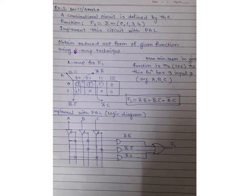The first step is to obtain the reduced SOP form of the given function using the KMAP technique. The maximum minterm is 4, represented as 1, 0, 0 — meaning 3 bits are required — so this function has 3 inputs: A, B, C. Filling the KMAP: minterms 0, 1, 3, 4 are placed as 1s, remaining positions are 0.